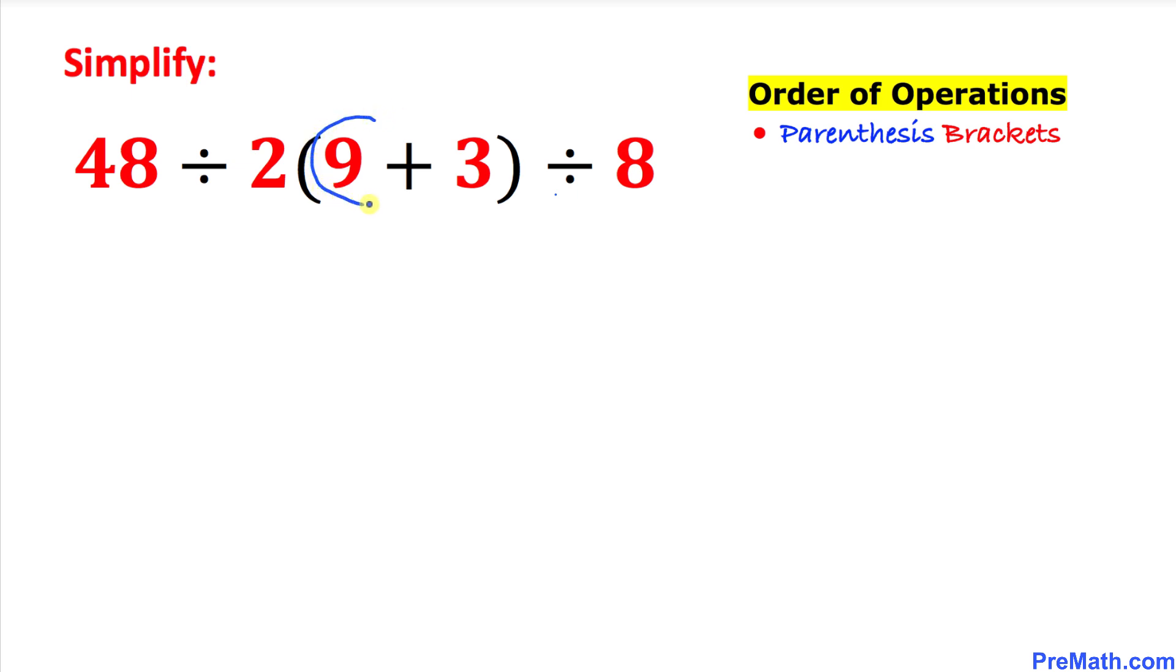Over here these are our numbers inside this parentheses: 9 plus 3 is 12. So this could be simplified as 12 is going to come over here and here's our next step.